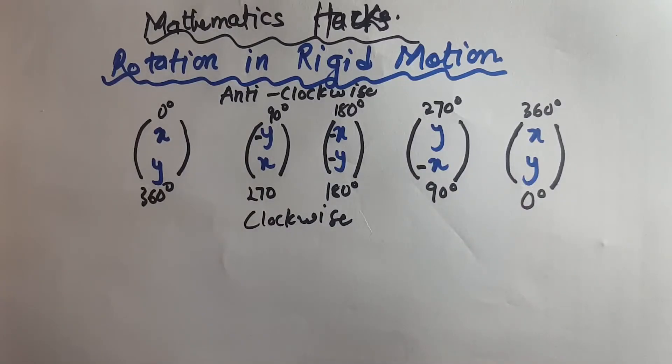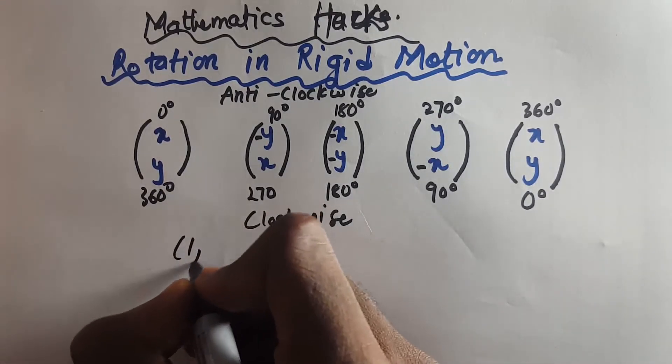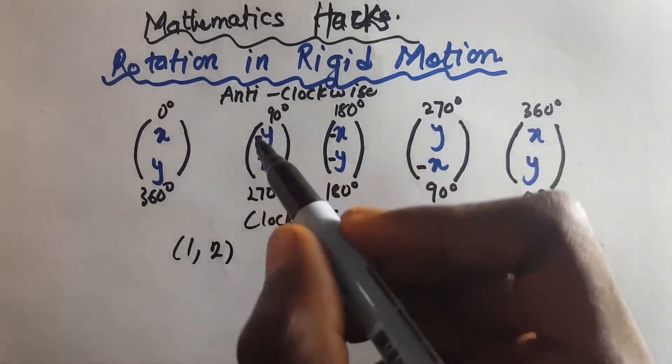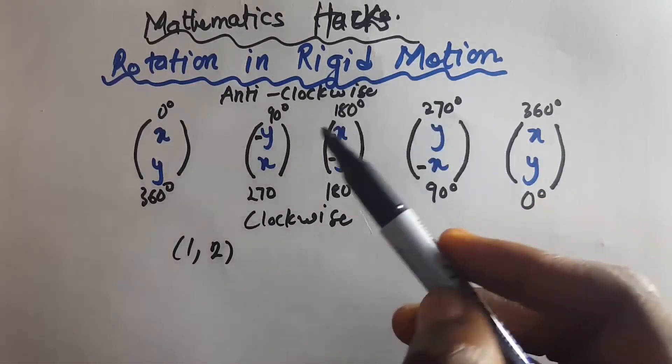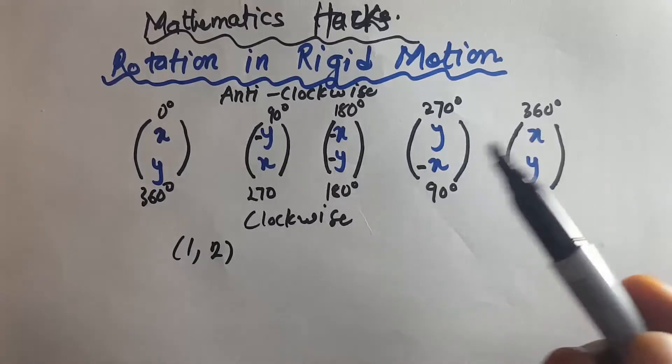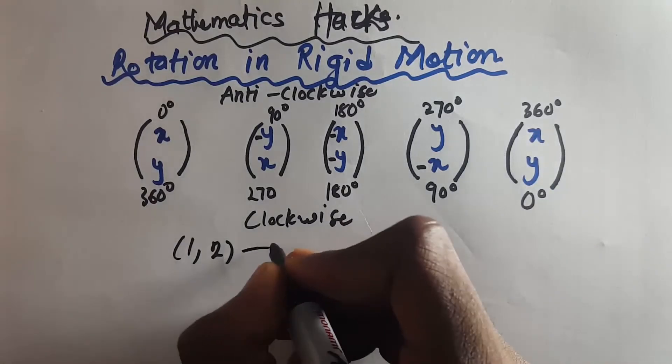When you are told to rotate 90 degrees anti-clockwise or 270 degrees clockwise, you transform your point. For example, if you have a point like (1, 2), you are going to have (-2, 1).